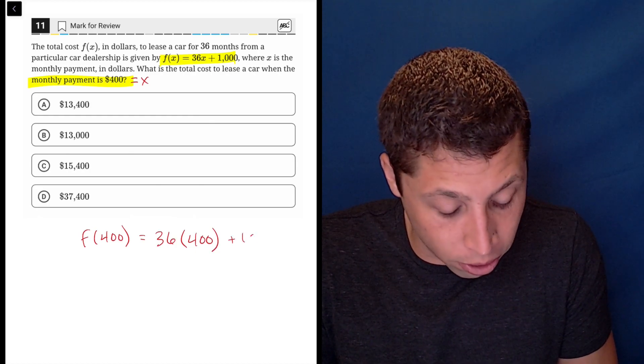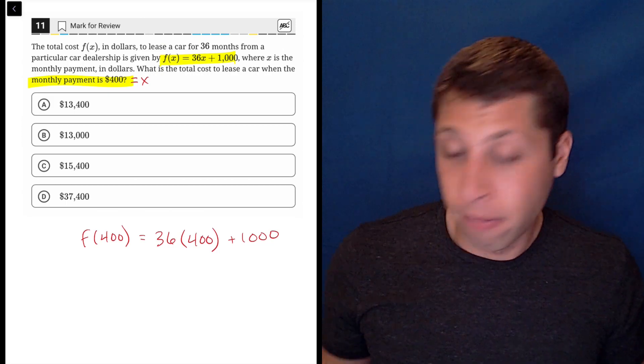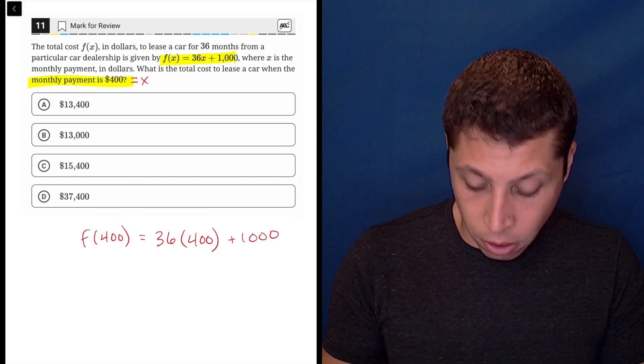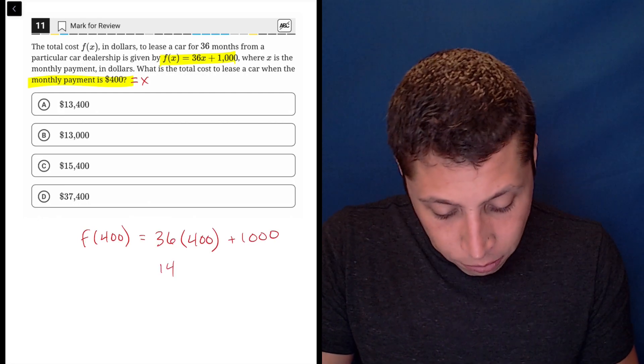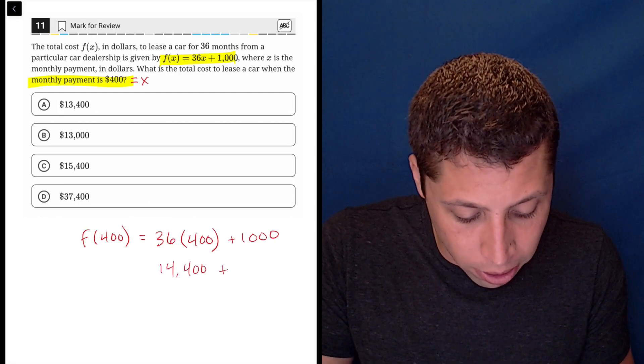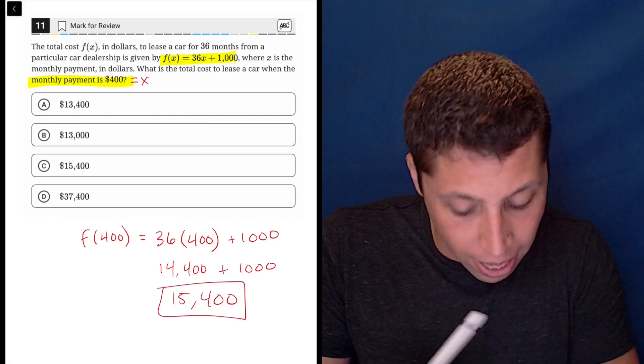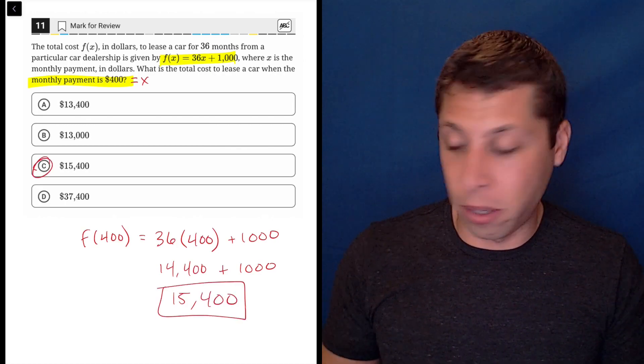So 36 times 400 plus 1,000. I don't know 36 times 400, I'm going to use my calculator. That's okay. 36 times 400 is 14,400 plus 1,000 is 15,400. And that is my answer. And that is choice C.